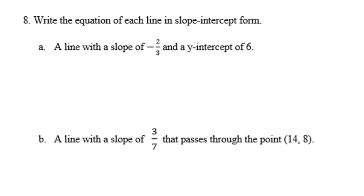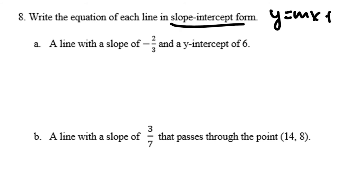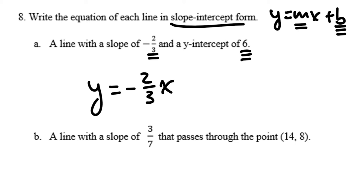The first one is probably the simplest of the three. Part A says: write the equation of a line in slope-intercept form with a slope of negative 2 thirds and a y-intercept of 6. That's given me exactly what I need. Slope-intercept form is y equals mx plus b, where m is the slope and b is the y-intercept. So I can write y equals negative 2 thirds x plus 6. This is the equation of a line with slope negative 2 thirds and y-intercept of 6.